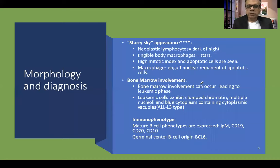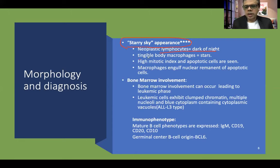A characteristic morphological feature that helps clinch the diagnosis of Burkitt lymphoma is the starry sky appearance. The neoplastic lymphocytes are quite monomorphic and dark bluish-looking, creating a dark background. Intermittent large, lighter-staining macrophages called tingible body macrophages — which ingest apoptotic debris — appear as stars against this dark background, giving the starry sky appearance.